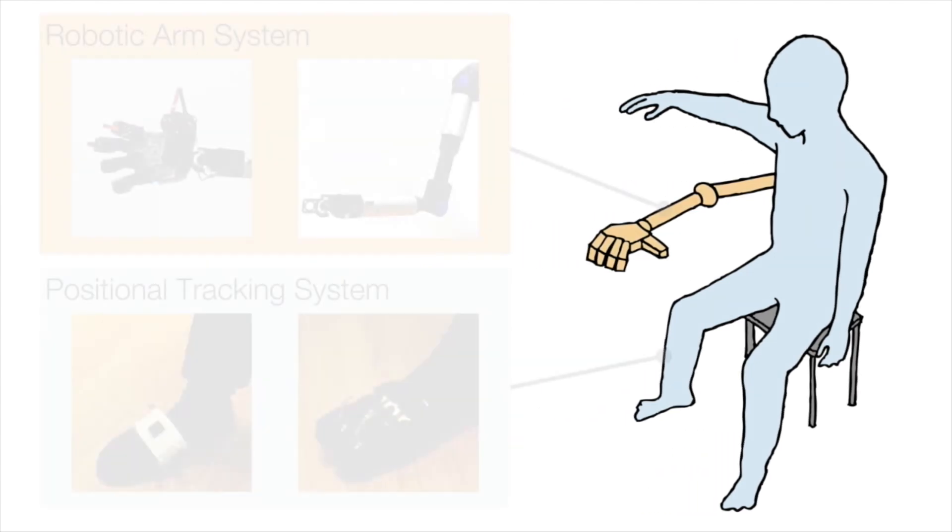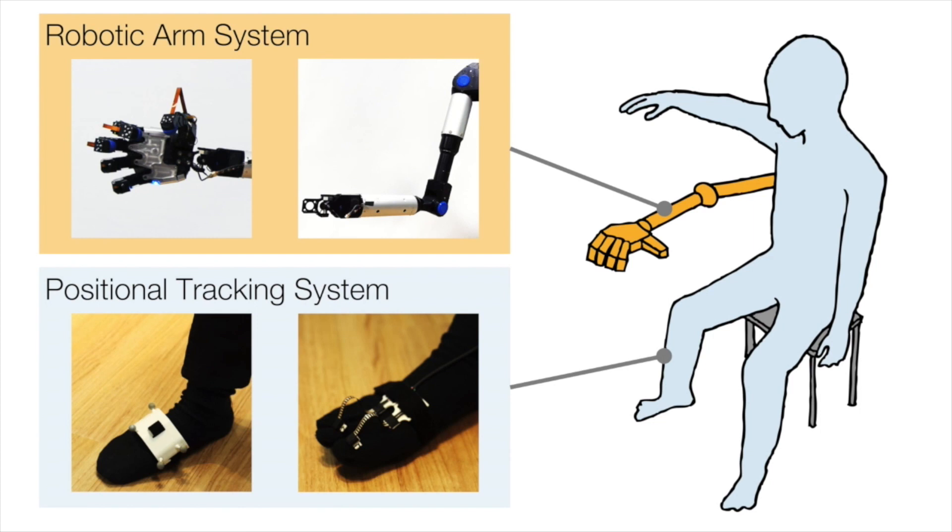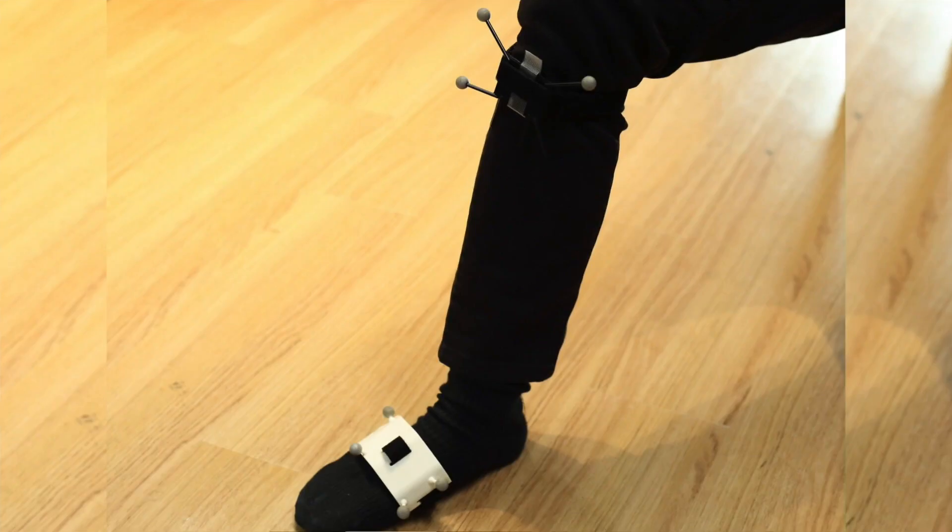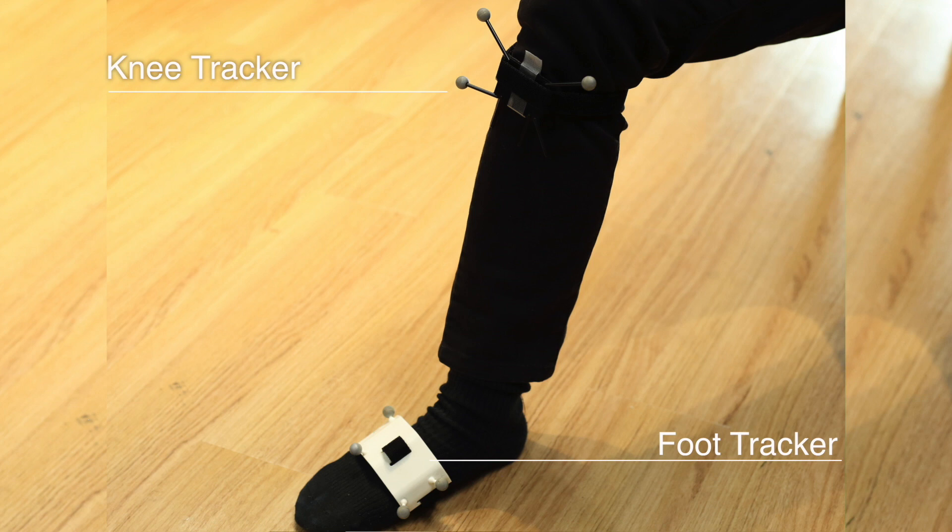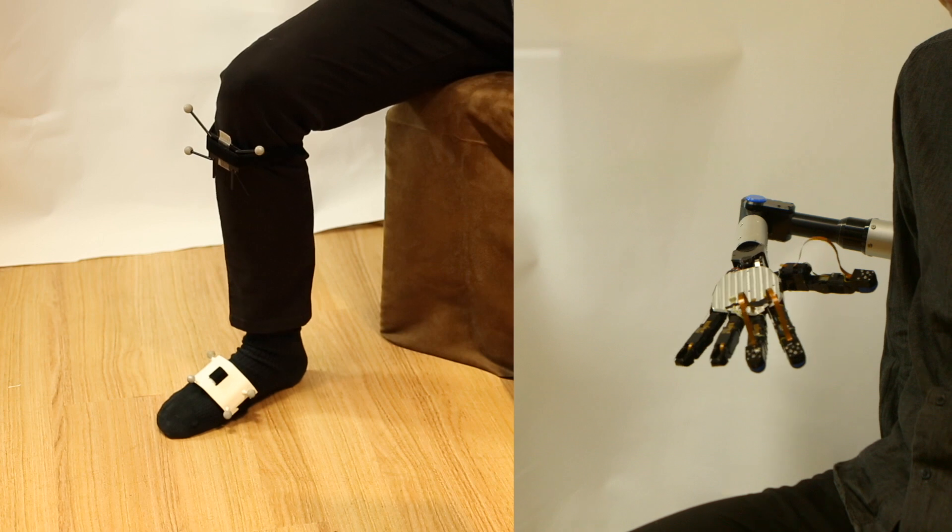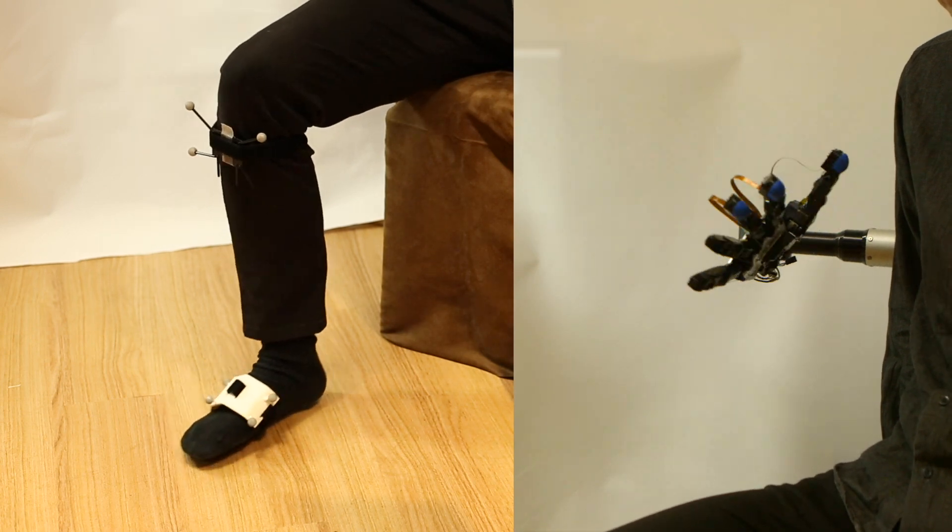The proposed system consists mainly of two parts: one is a limb postural tracking system and the other is a mounted robotic arms system. In the tracking system, optical tracking markers are attached to your toes and knees to measure position and rotation. The movement of the robotic arm is generated by the tracked information.